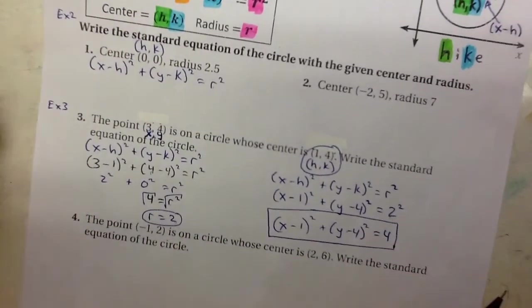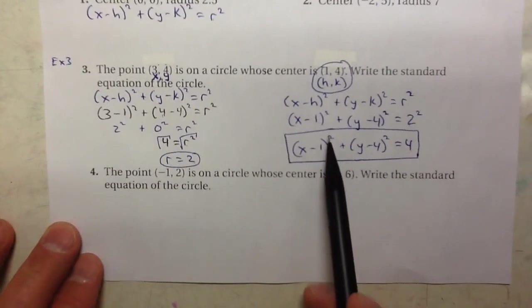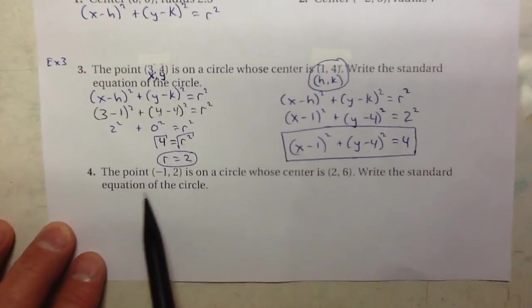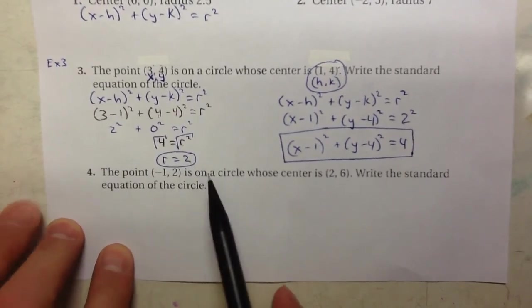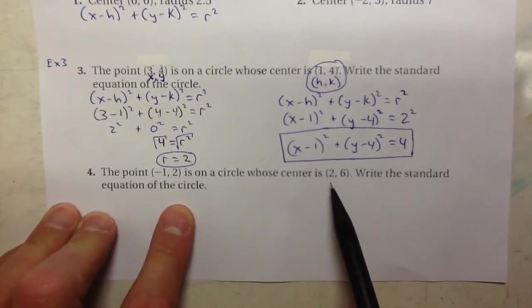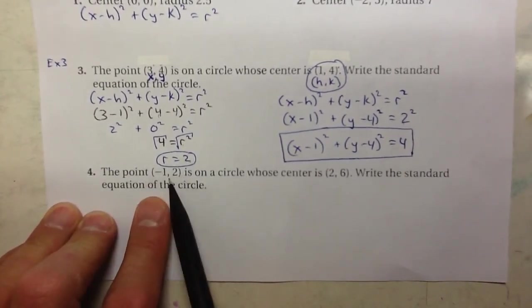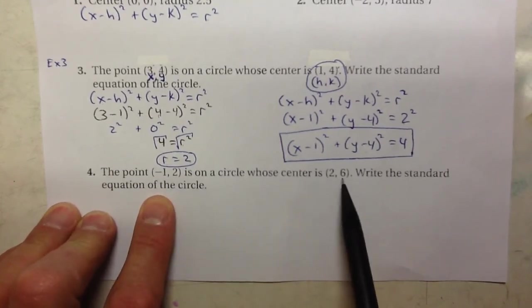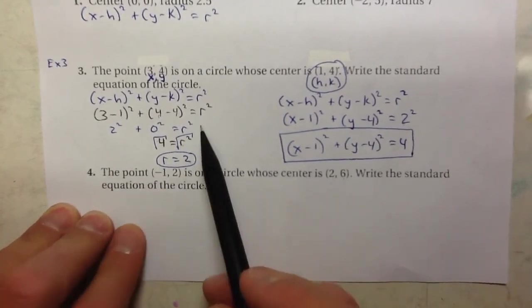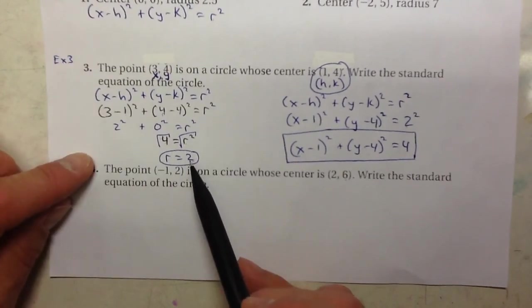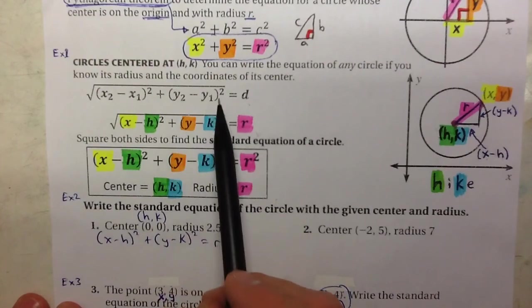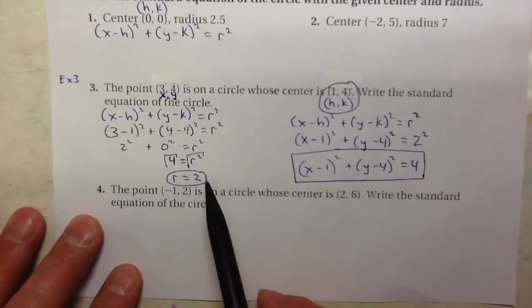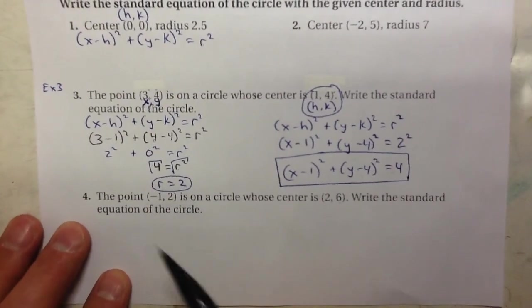Go ahead and follow this same pattern for question number 4. They give you a point and the center of the circle — the same exact type of question. You can use the distance formula to find the length of the radius, or use the standard form method and plug in what you know to solve for r. Either approach works.